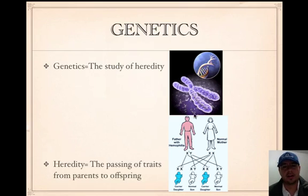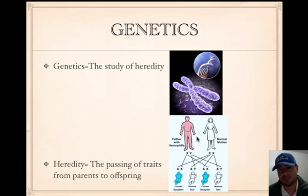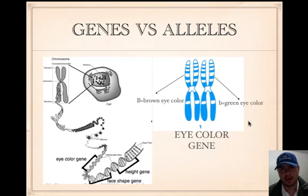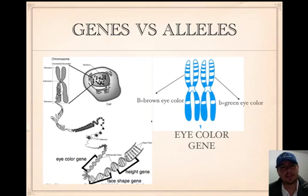So what is heredity? Looking at this picture, we see two parents having offspring, and they're going to give them some genes or DNA with instructions — this is how you get your traits. Heredity is the passing of traits from parents to offspring. We need to know the difference between DNA, chromosomes, genes, and alleles.